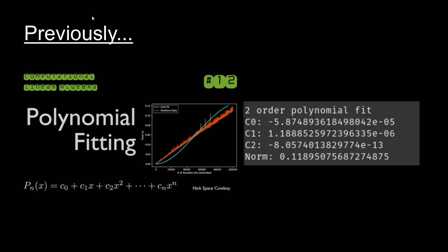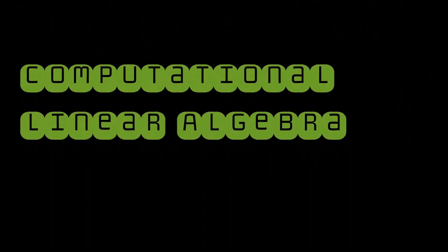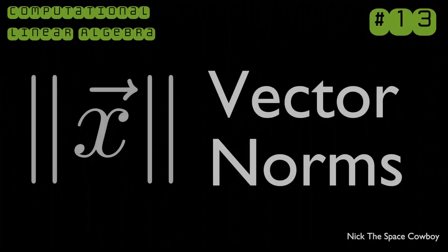Previously we discussed polynomial fitting and used the vector norm to determine how well different order polynomial models were fitting to our dataset. Well, vector norms are important enough that they are getting their own video in this 13th episode of computational linear algebra.